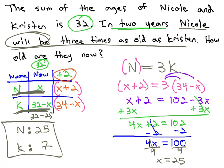When we're given the sum right now as 32, while we don't know the first person, the second person is the total minus the first, 32 minus x.